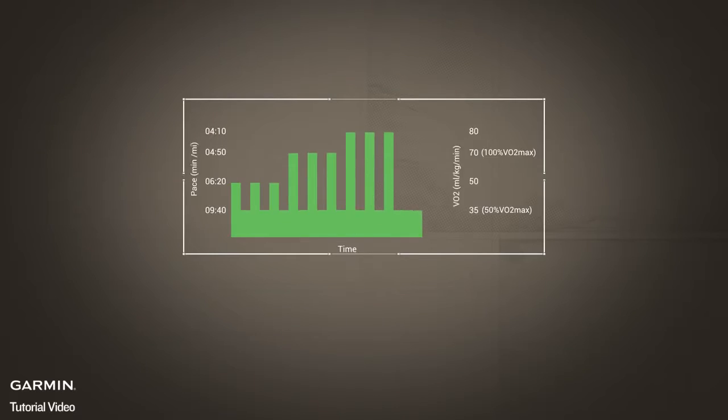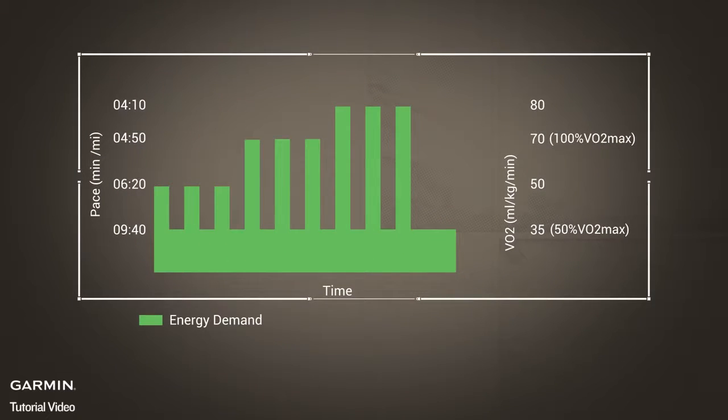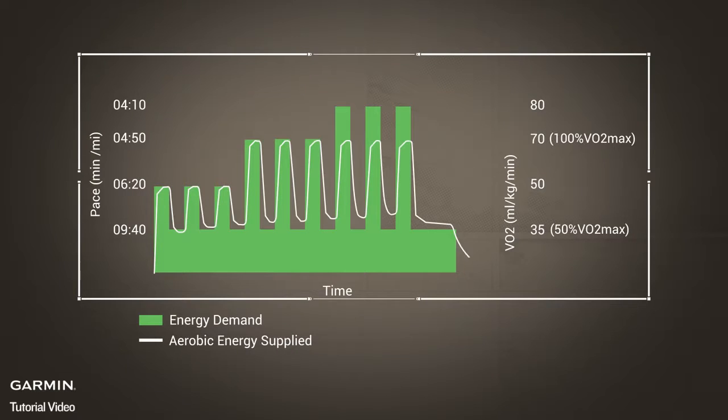Look at this graph. In this example of high intensity intervals, the total energy demand is represented by the green area. In the case of the last three intervals, the total energy needed is greater than what can be supplied by aerobic sources alone. Therefore, the striped area represents a measurement of the anaerobic work done.